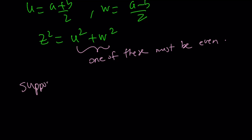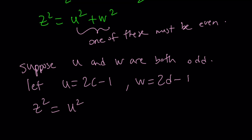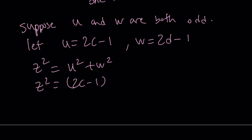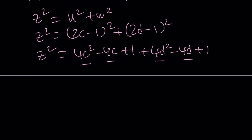Suppose u and w are both odd. We can let u equal 2c minus 1 and w equal 2d minus 1. Since z squared equals u squared plus w squared, z squared becomes (2c−1)² + (2d−1)², which expands to 4c² − 4c + 1 + 4d² − 4d + 1. Notice these terms are all divisible by 4, and then I get 1 plus 1 which is 2. So z squared equals 4 times something plus 2, which means z squared is congruent to 2 mod 4.